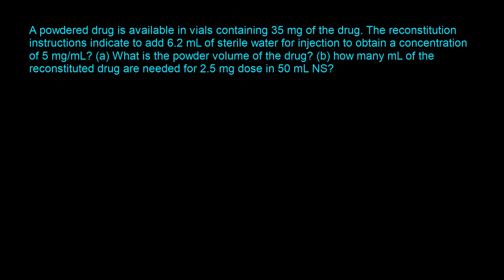This question says: a powdered drug is available in vials containing 35 milligrams of the drug. The reconstitution instructions indicate to add 6.2 milliliters of sterile water for injection to obtain a concentration of 5 milligrams per milliliter. A: What is the powder volume of the drug? B: How many milliliters of the reconstituted drug are needed for a 2.5 milligram dose in 50 milliliters normal saline? So let's first proceed with the solution to part A.